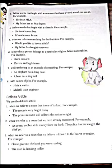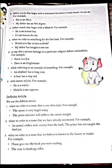Next, when we refer to something for the first time, in that case we will also use an indefinite article. For example: Would you like to have a drink? So before 'drink', article A has been used. And to say that a person belongs to a particular religion or nationality, we will also use indefinite articles. Like: Kuria is a Jew. Dave is an Englishman.